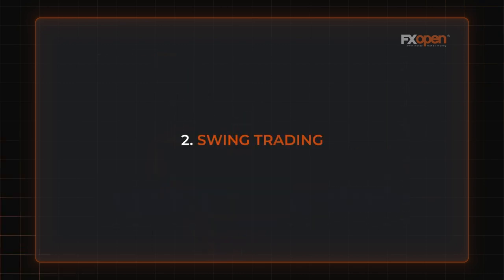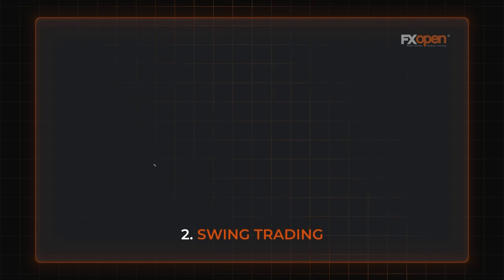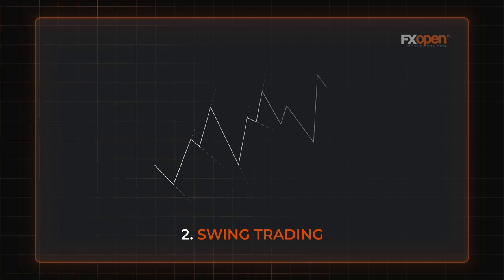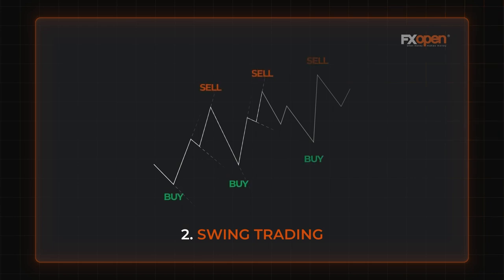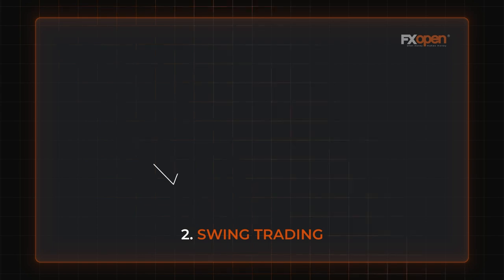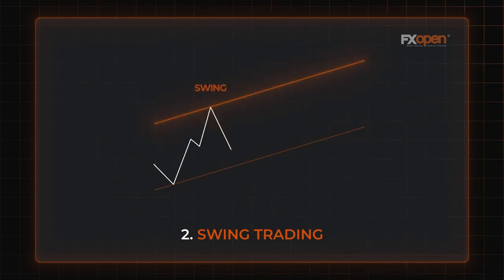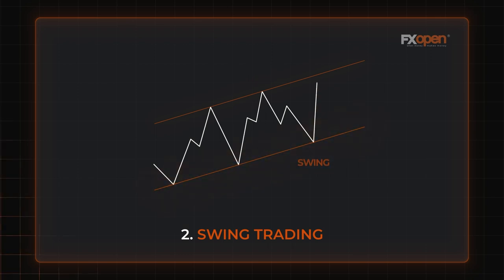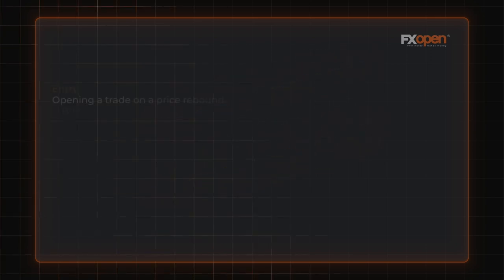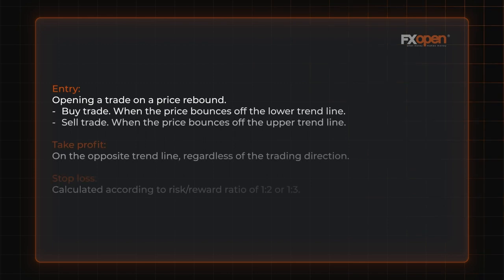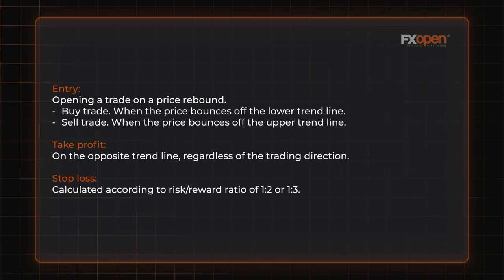Swing trading is among the top Forex strategies used on different timeframes. It's based on the assumption that the price can't constantly move in one direction. Even within strong trends, the rate corrects and moves against the overall trend. Traders use such movements to both buy and sell within the trend. The best way to trade currency with the swing approach is to place trend lines. Every time the price touches a trend line and turns around, it's a swing. A sell trade may be set when a price bounces from the upper trend line, and a buy position may be opened when it bounces from the lower trend line.